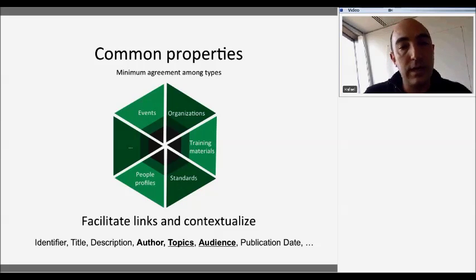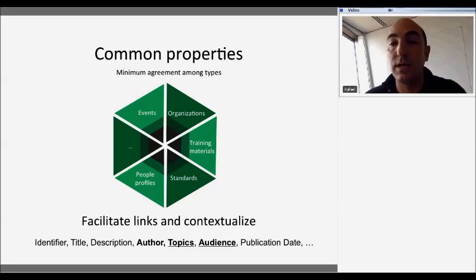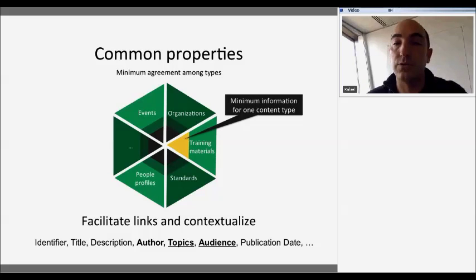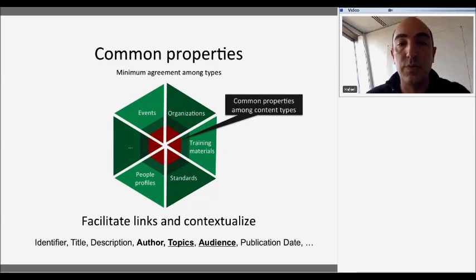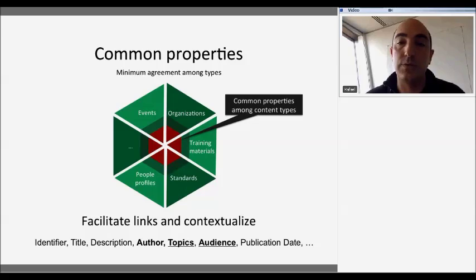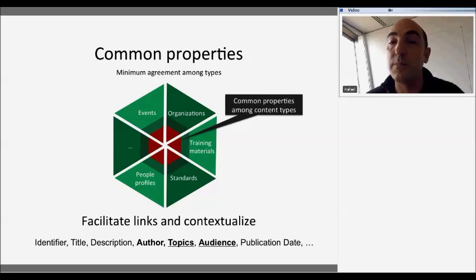I like this slide because it really symbolizes what BioSchemas is — and actually our logo came from it. Every triangle represents one specification: events, organizations, training materials, standards, people, and we will have more. For every specification we have minimum information — properties that are relevant and important for that specification and for the life sciences. Something we are trying to do is look within that minimum information for common properties across all types. This is very important because it can facilitate linking and contextualization of different types, and enable searching across events, standards, and organizations by a common topic or date.